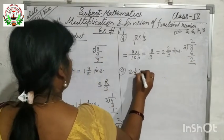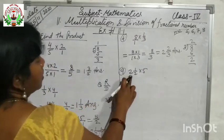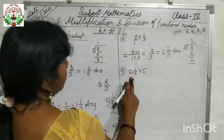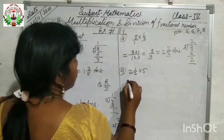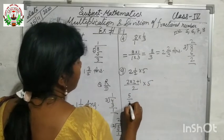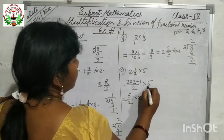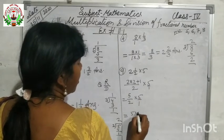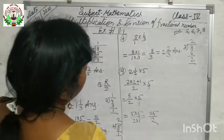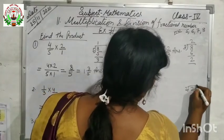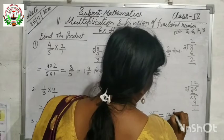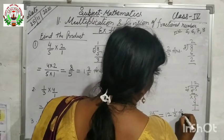Now I am solving question number 9: 2 and 1/2 into 5. It is a mixed fraction. First we will break this number: 2 into 2 plus 1 by 2, which gives 5/2. Then 5/2 into 5/1. Multiply: 5 into 5 is 25, and 2 into 1 is 2. So we get 25/2. Converting to mixed fraction: 2 twelves are 24, so 12 and 1/2. This is the answer.